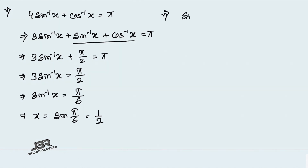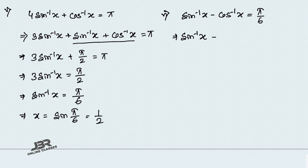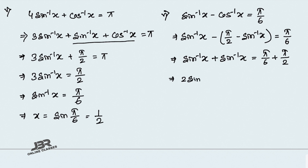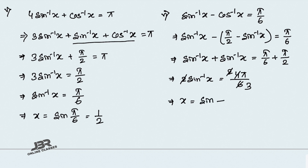Problem 6: sin inverse x minus cos inverse x equals π/6. Replace cos inverse x with π/2 minus sin inverse x, giving 2 sin inverse x equals π/6 plus π/2. With LCM 6, that gives 2 sin inverse x equals 4π/6 equals 2π/3, so sin inverse x equals π/3. Therefore x equals sin(π/3) equals root 3 over 2.